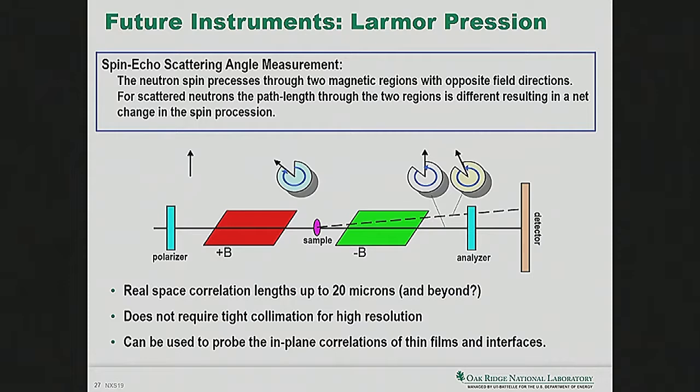The Larmor precession technique is useful when the scattering angle is so small that the neutron isn't even scattered out of the beam — you can still measure the change in momentum because the spin direction won't match the unscattered neutrons. This is the principle used in neutron spin echo (NSES). There are currently four or five instruments in the world using this technique; certain measurements are already well enough understood to do science, but there's still a lot of work to do.